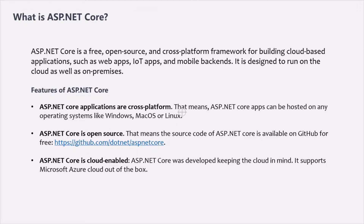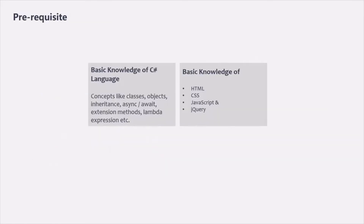This was a brief overview of what ASP.NET Core is. To take this course, there are a few prerequisites: you should have a basic understanding of C# programming language including OOP concepts, async/await, extension methods, and lambda expressions. Basic knowledge of HTML, CSS, JavaScript, and jQuery is also required. Another important feature of this course is that after each topic, I will provide interview questions related to that topic that have been asked in real interviews.